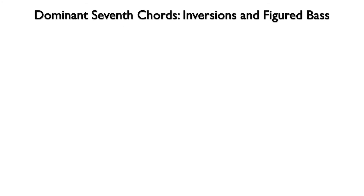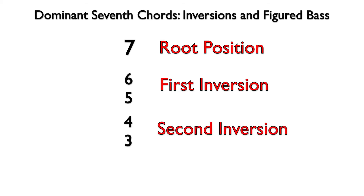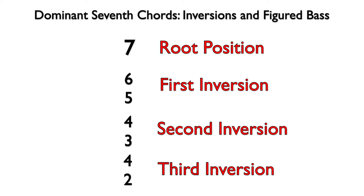To review: a figure of 7 below a bass note indicates a root position seventh chord; a figure of 6-5 indicates a first inversion seventh chord; a figure of 4-3 indicates a second inversion seventh chord; and a figure of 4-2 indicates a third inversion seventh chord. If this chord is a V7, it is known as a dominant seventh chord.